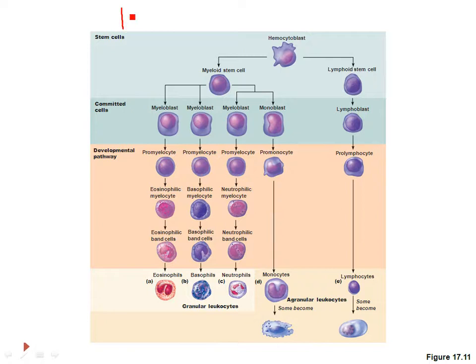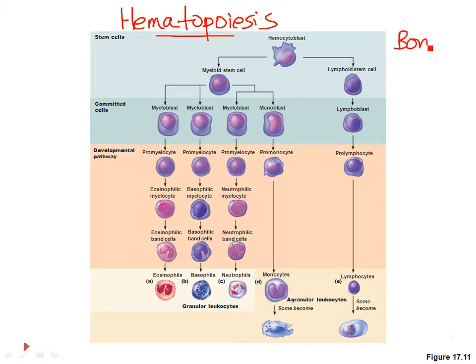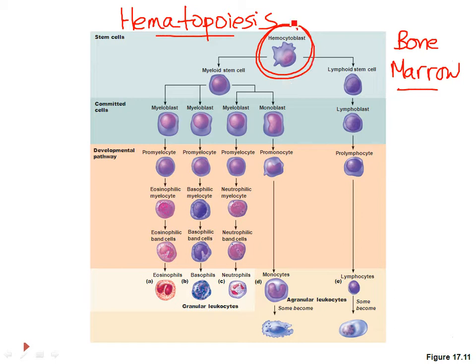This is a diagram of hematopoiesis, which means blood cell formation. All of your blood cells originate or develop in the bone marrow. They all develop from a common type of stem cell, which is an immature, unspecialized blood cell called a hemocytoblast. So all of your blood cells — red blood cells, white blood cells, all those different types, plus your platelets — are derived from these hemocytoblasts present in your bone marrow.